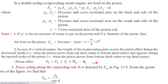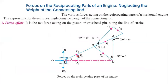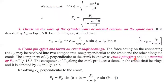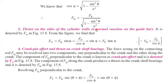The next force is the force acting on the connecting rod. Fq is the force acting on the connecting rod. The formula is Fq = Fp / cos φ. And cos φ can be written as the square root of (1 − sin²θ / n²). So Fq can be written as Fp divided by the square root of (1 − sin²θ / n²).